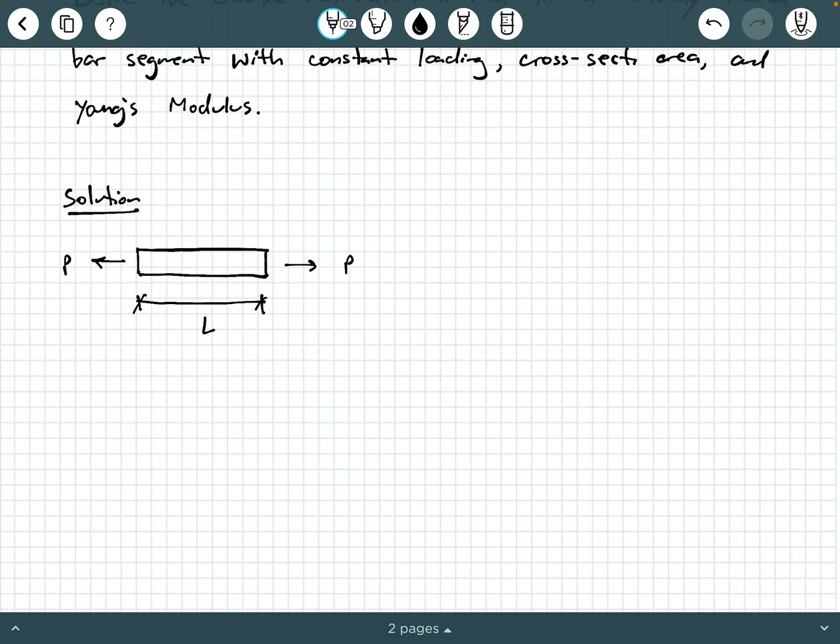We can call that constant internal load P. And then it has constant material properties and section properties of A and E. So very simple bar segment. We want to derive that formula for a single segment, PL over AE.